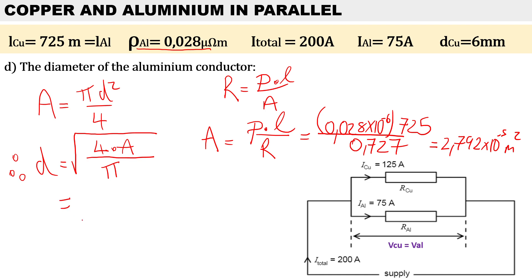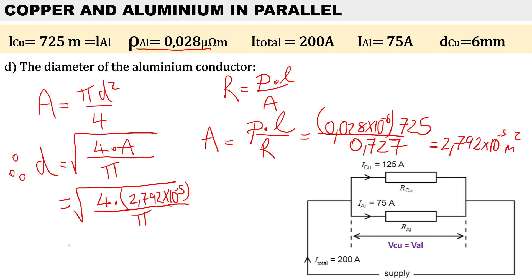Now we can work out the diameter. Don't forget the square root sign: diameter equals the square root of 4 times the area — 2.792 times 10 to the minus 5 meters squared — over pi. Therefore the diameter for the aluminium cable, simplified to millimeters, is 5.962 millimeters. Thanks for watching this video on two conductors in parallel.